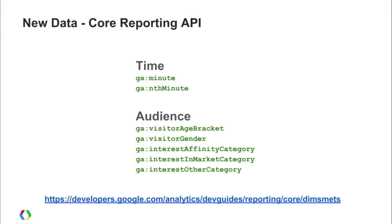The next update is the Core Reporting API, where we've added new data. Minute-level data was something a lot of people had requested, and it's now available — you can query by minute, which is impressive when you do it over a long time period. We also have 'nth minute,' an indexed value showing index positions over the specified time period. Additionally, if you have audience reports enabled in Google Analytics, we've added dimensions and metrics around that audience reporting data, now accessible through the Core Reporting API.